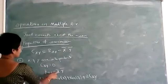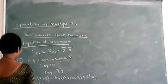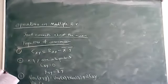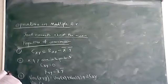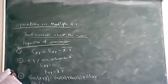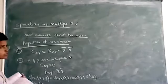That is, R(X,Y) is equal to X bar Y bar. The third property is variance of X plus Y is equal to variance of X plus variance of Y plus 2C(X,Y).